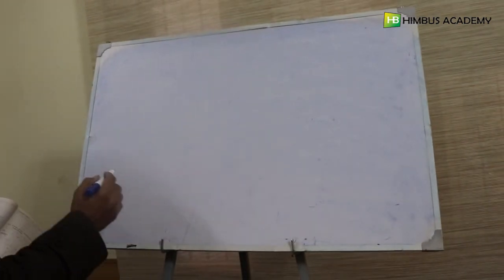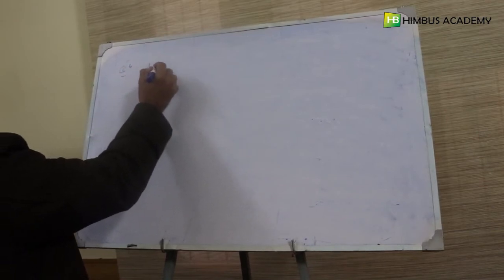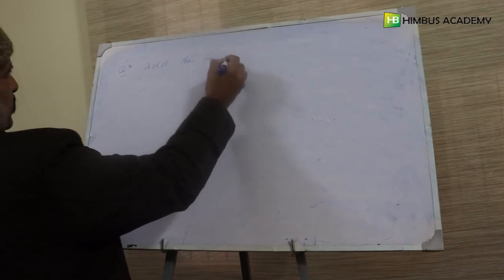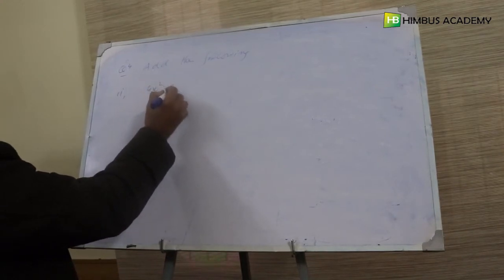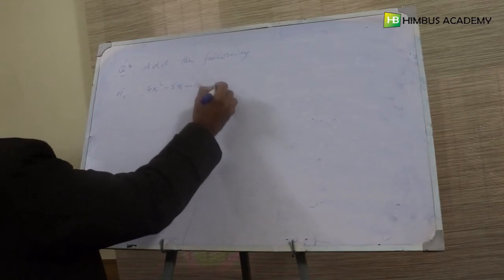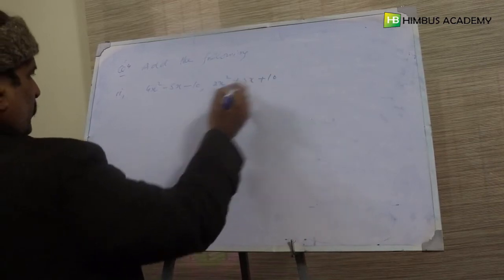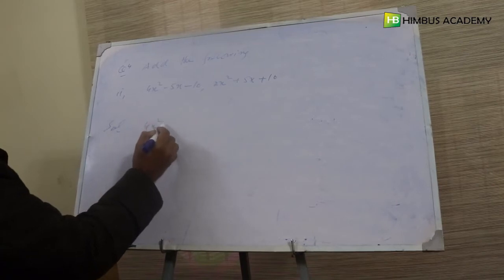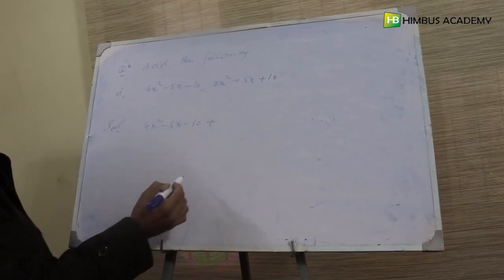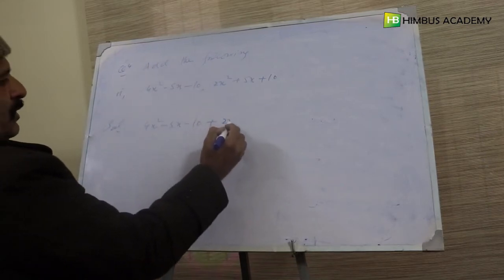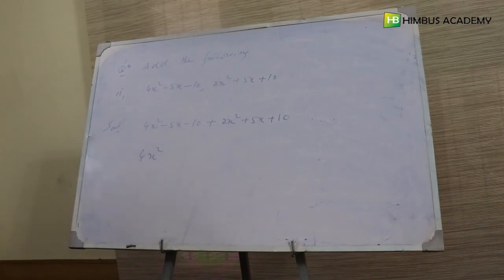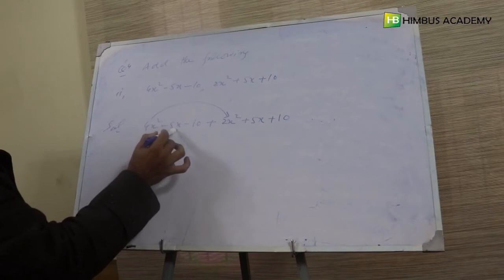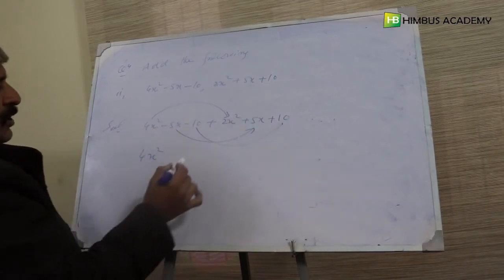Question number four mein add the following rational expressions. Number first: four x square minus five x minus ten, plus two x square plus five x plus ten. In dono jumlon ko add karna hai. Like terms woh hote hain jis ke exponents same hon — yaani four x square ka like term two x square hai, minus five x ka like term five x hai, minus ten ka like term plus ten hai. To like terms arrange kar lete hain.